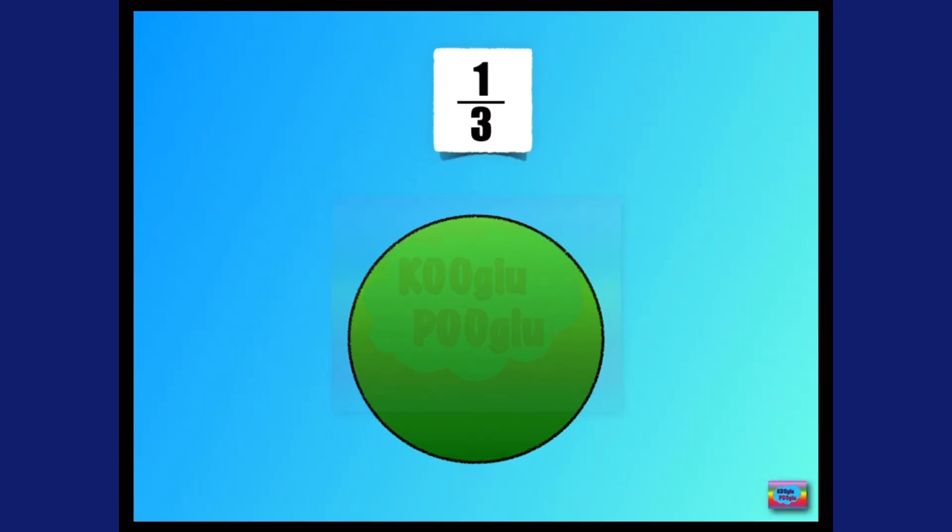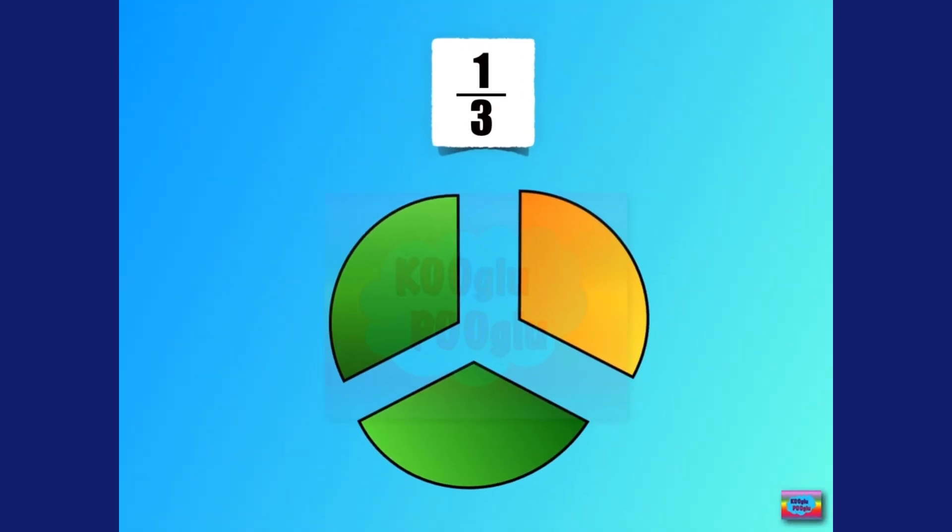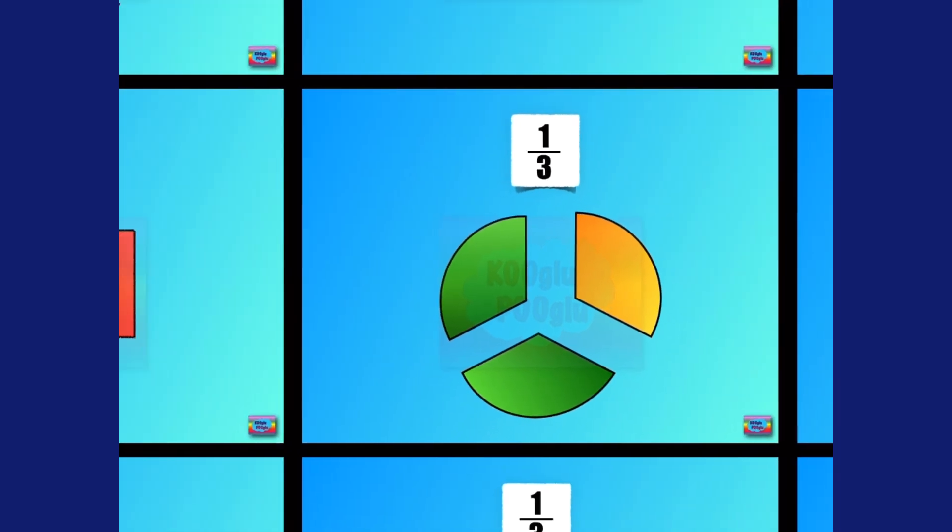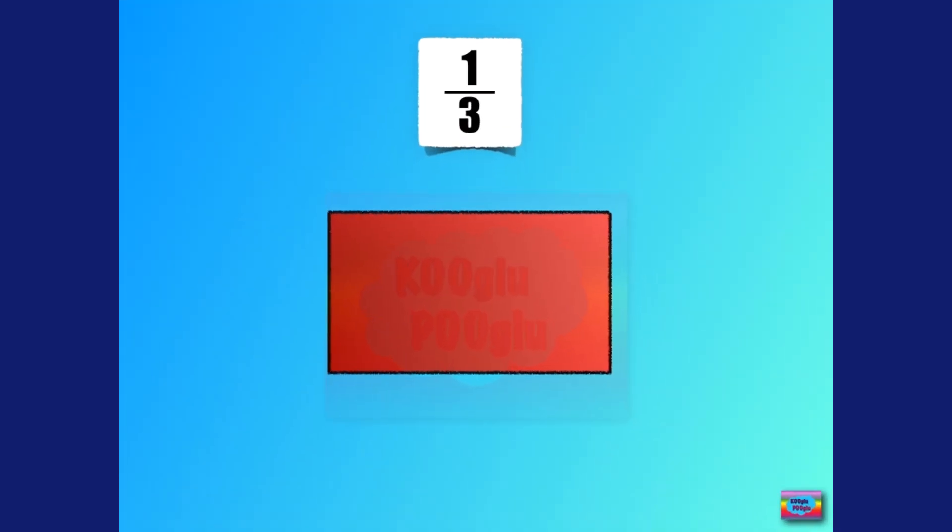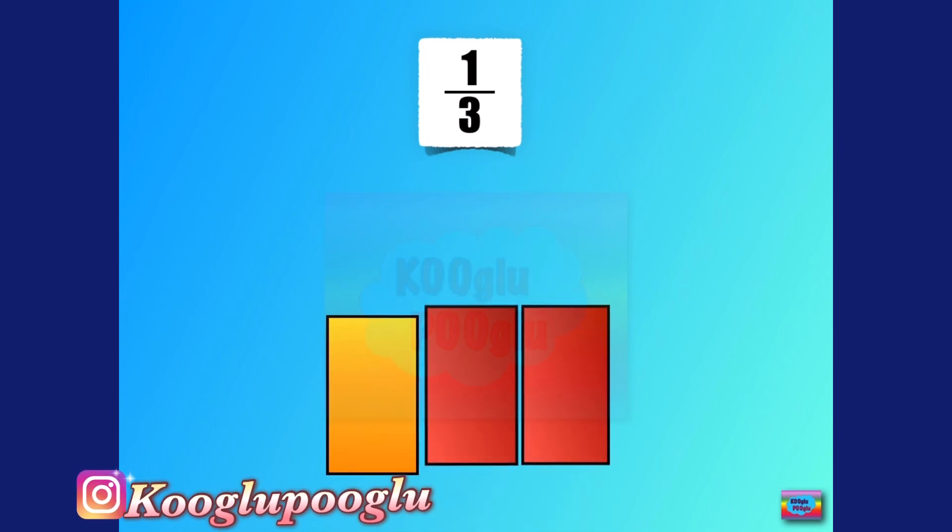Here we have one third. This means that one whole is divided into three parts. So all of them are cut into one third, but the orange one represents that one of them is shaded and the others are not. Same thing over here. Only one part is shaded in, but all of them are one thirds.